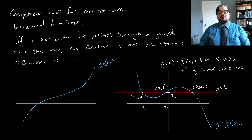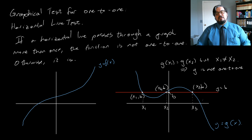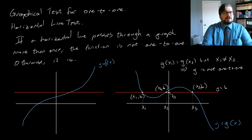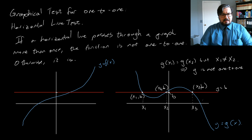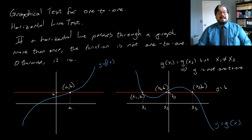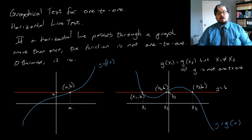If I ask what input gives an output of b, you can't tell me just a single number — you've got to give me three numbers. So this function is not one-to-one. On the other hand, for the left graph, if I ask what x-value corresponds to a y-value of b, you'll be able to tell me just a single number — call it a. So we can use the horizontal line test to check whether functions are one-to-one, often very easily.